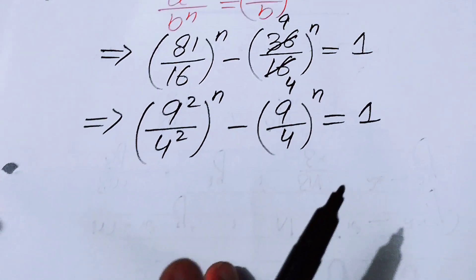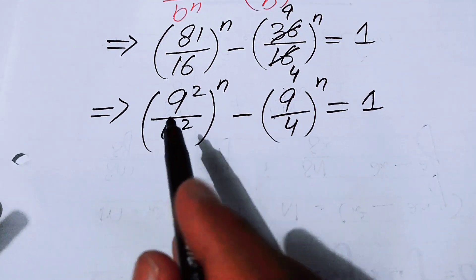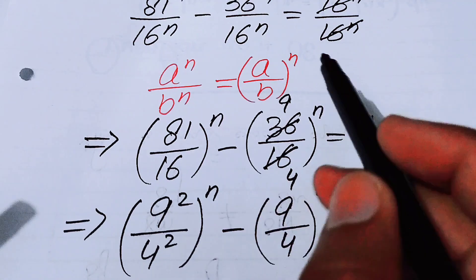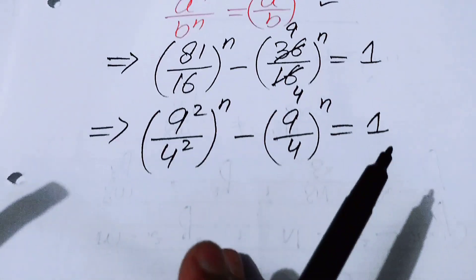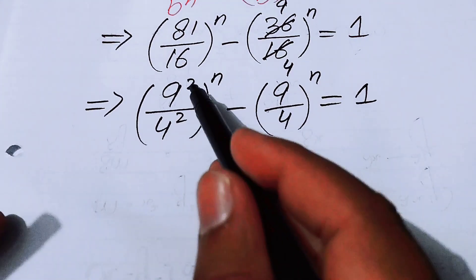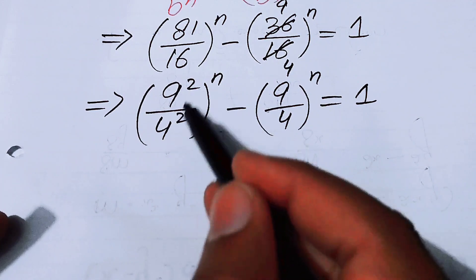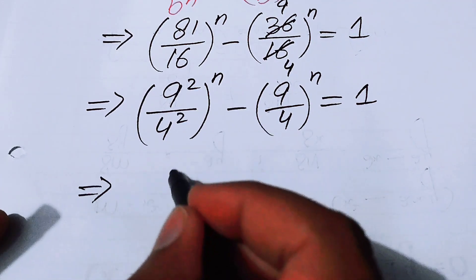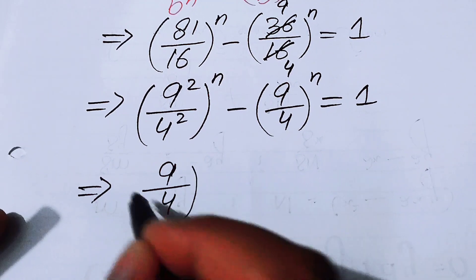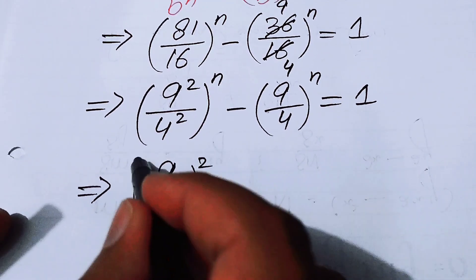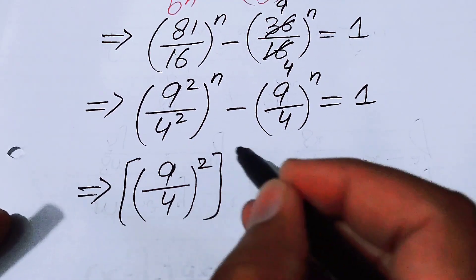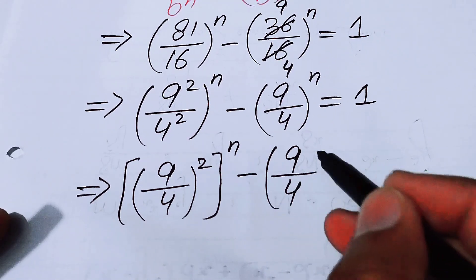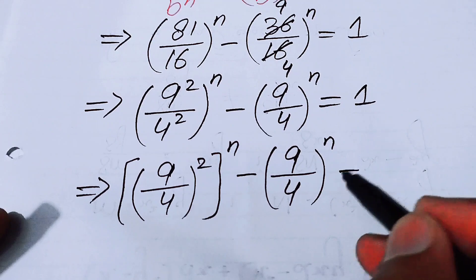We apply the exponential law again, combining the exponent 2 as a whole exponent, and write (9/4)^(2n) minus (9/4)^n equals 1.